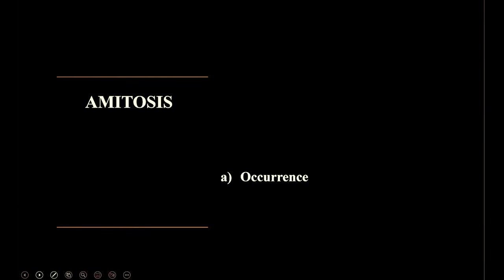Now let's get into amitosis. We have to be very clear with the names, as we can find the process from the name itself. Amitosis means absence of mitosis — the things that happen in mitosis are not going to happen in amitosis.